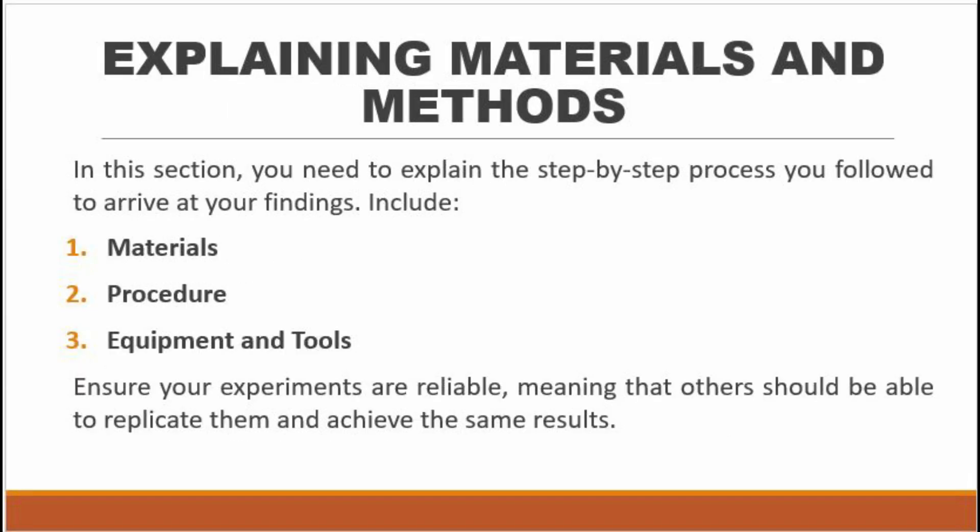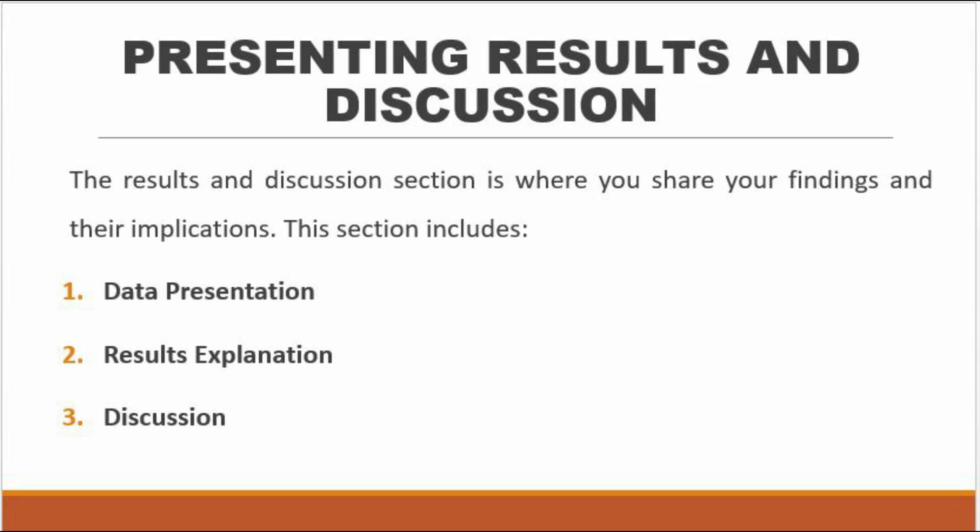Explaining materials and methods: In this section, you need to explain the step-by-step process you followed to arrive at your findings. Include: first, materials — list all the materials used in your experiments; second, procedure — describe the experimental procedure in detail; third, equipment and tools — mention any instruments or tools used for data analysis. Ensure your experiments are reliable, meaning that others should be able to replicate them and achieve the same results.